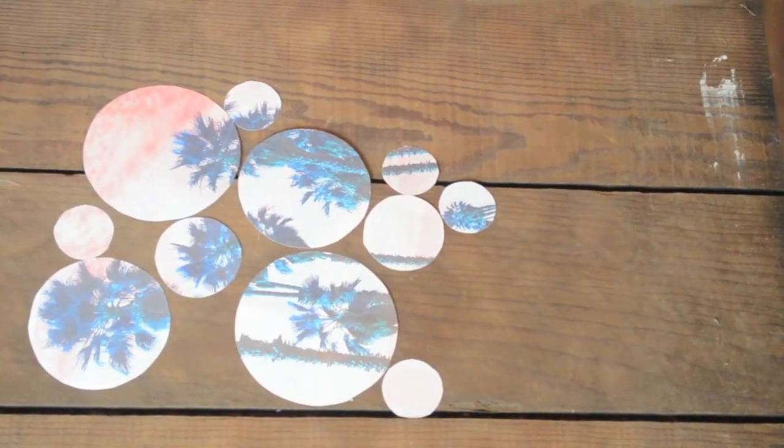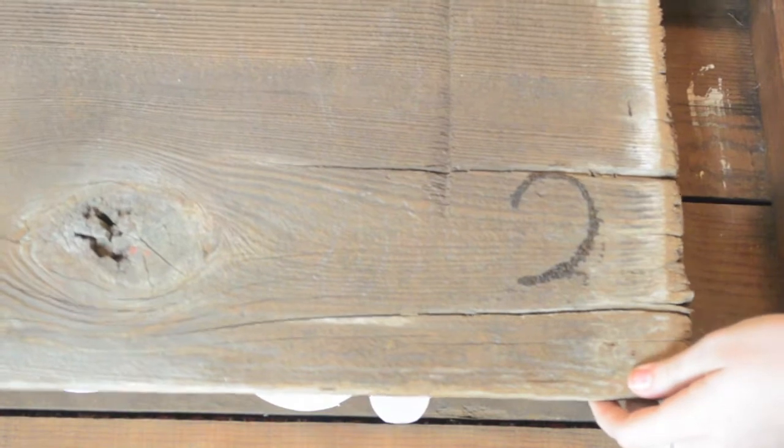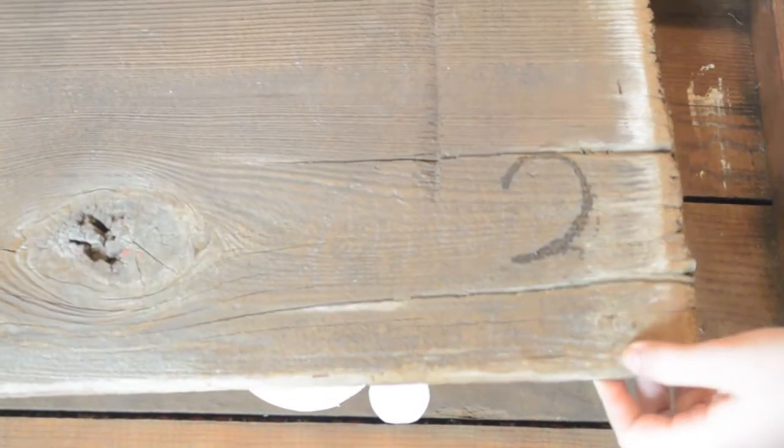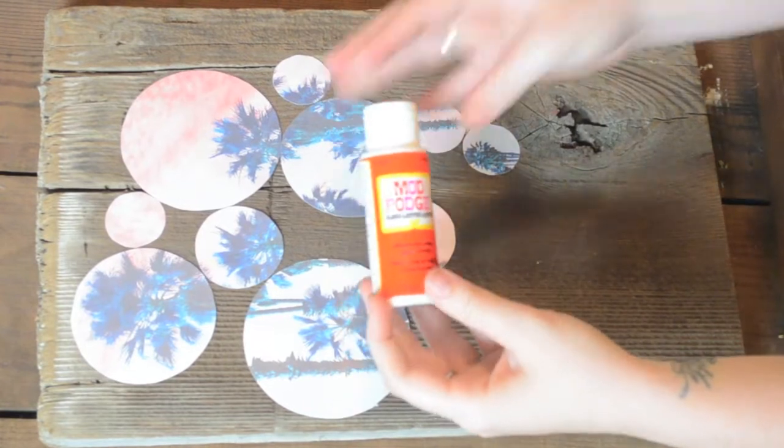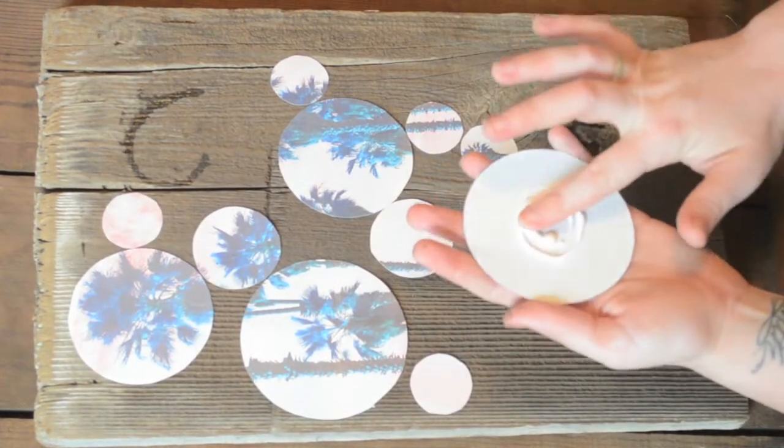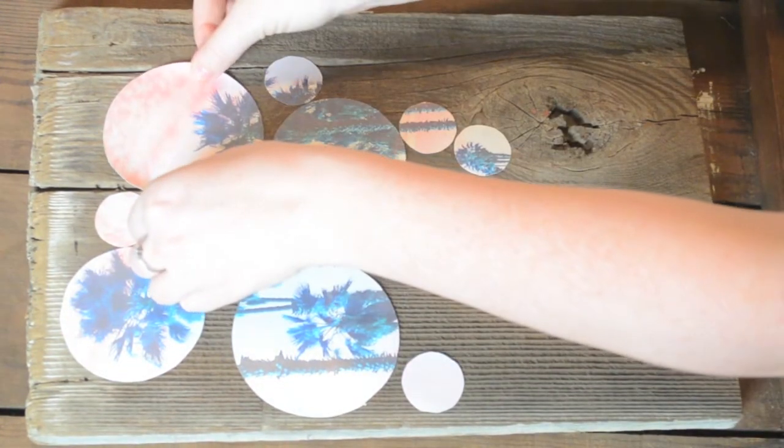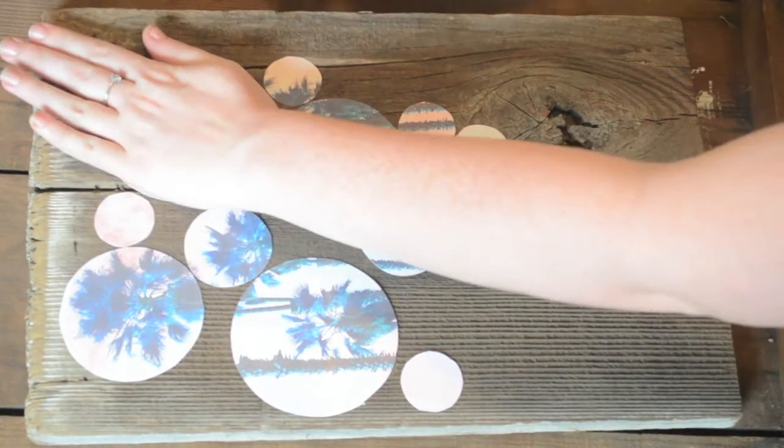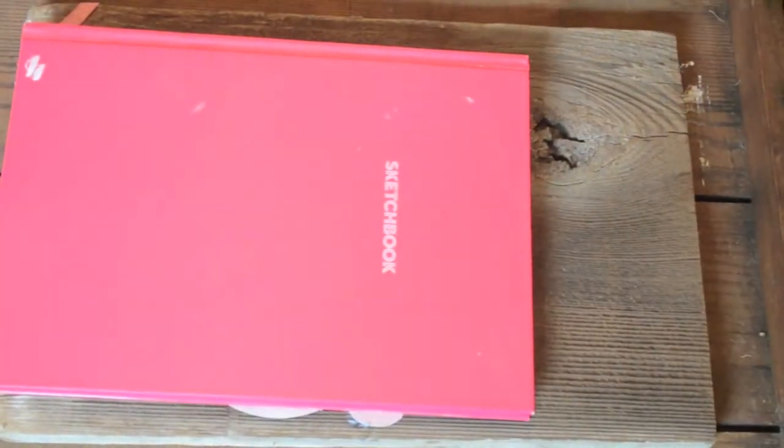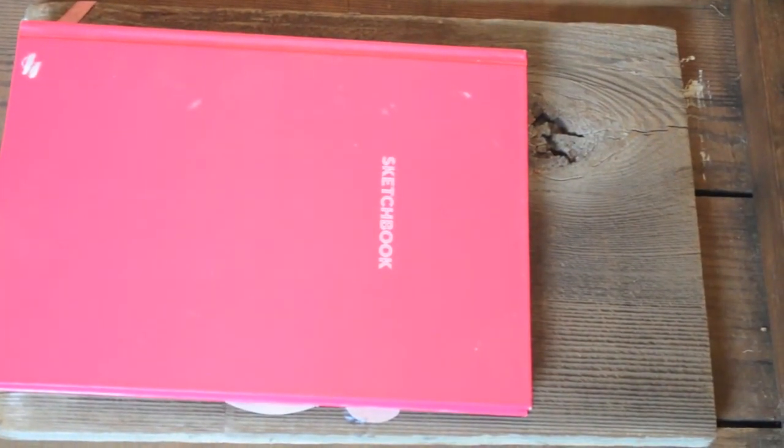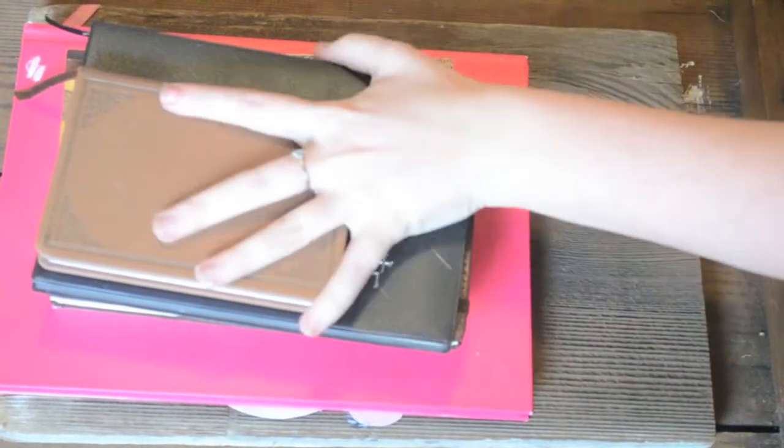Next, go ahead and lay your pictures out so you know where to glue them, and I'm going to glue them onto this piece of fence that I found at a thrift store. Once you're done gluing all your circles down, go ahead and set something heavy on top of them so they don't curl up because they tend to do that when they are wet.